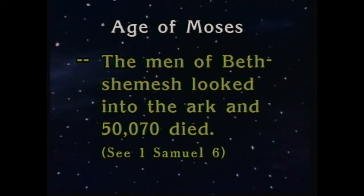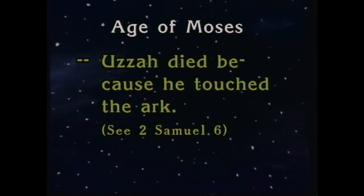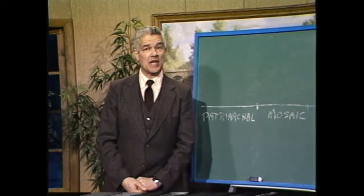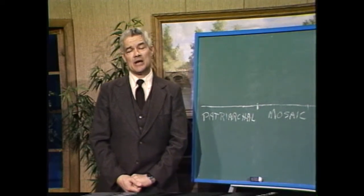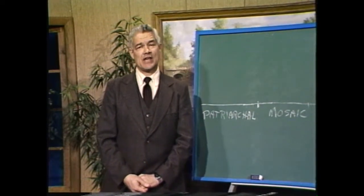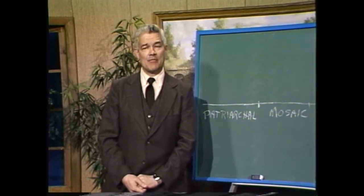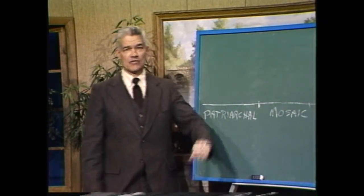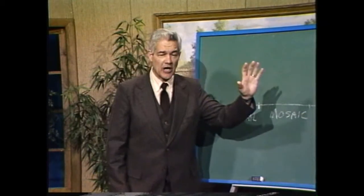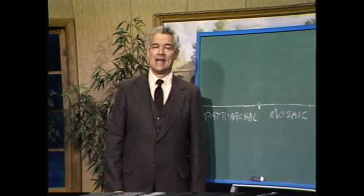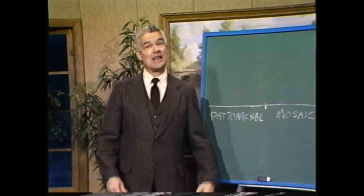In 2 Samuel chapter 6, we read about a man named Uzzah. The ark was being transported on an ox cart. It was not supposed to be transported that way — it was supposed to be carried by duly sanctified members of the tribe of Levi. But these men had erred; they put the ark of God upon an ox cart. When it came to Nacon's threshing floor, the oxen stumbled, and as the ark was about to fall, Uzzah stretched forth his hand and touched the ark of the covenant. And when he did, it angered the Lord, and the man died.